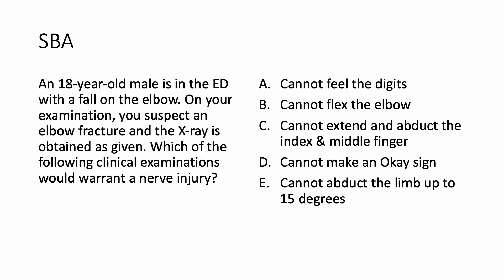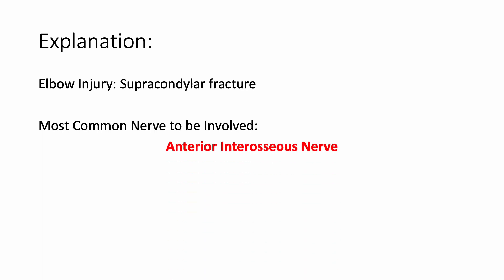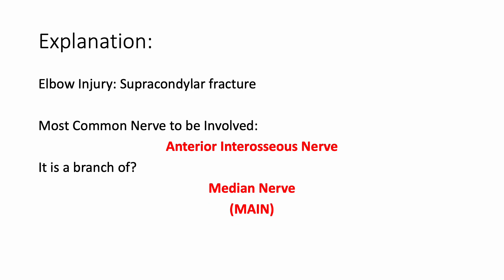Now let us look at the question again. You can pause the video over here and make a choice. So the elbow injury is showing a supracondylar fracture on the x-ray. What is the most common nerve to be involved? The most common nerve to be involved is the anterior interosseous nerve, which is a branch of the median nerve. I remember it by the mnemonic MAIN — M for median, anterior interosseous nerve. Let us now look at some theory behind it.